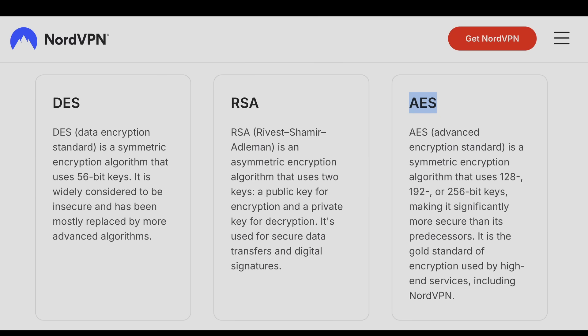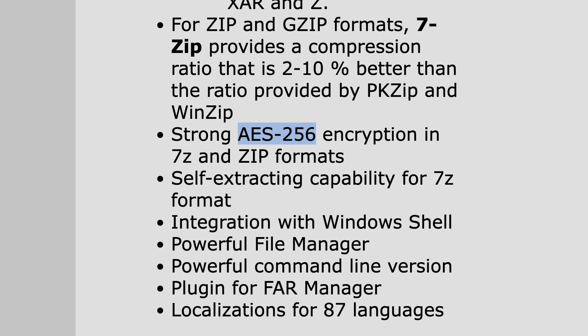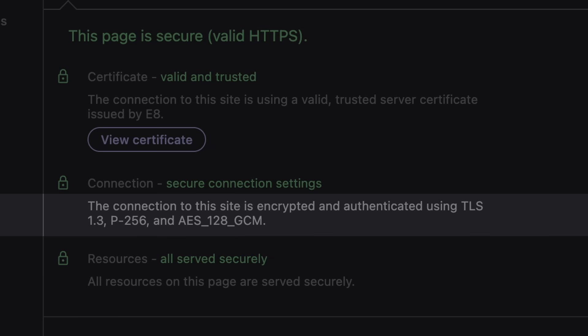NordVPN advertises that they can use AES, as well as ProtonVPN. 7-Zip uses it as the default algorithm when encrypting files. And you'll even see AES in the Security tab in Chrome DevTools for almost any website using HTTPS.